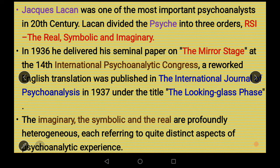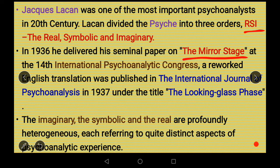Lacan divided the psyche into three orders, short-named RSI: Real, Symbolic, and Imaginary. In 1936, he delivered his seminal paper on the mirror stage at the 14th International Psychoanalytic Congress. This paper was translated into English and published in the International Journal of Psychoanalysis in 1937, titled 'The Looking Glass Phase.' The Imaginary, the Symbolic, and the Real are profoundly heterogeneous, each referring to quite distinct aspects of psychoanalytic experience.